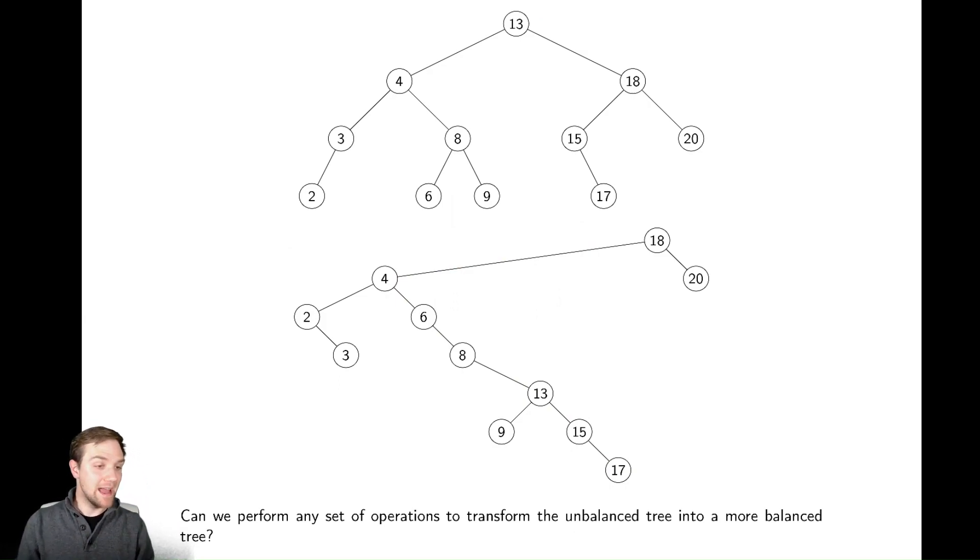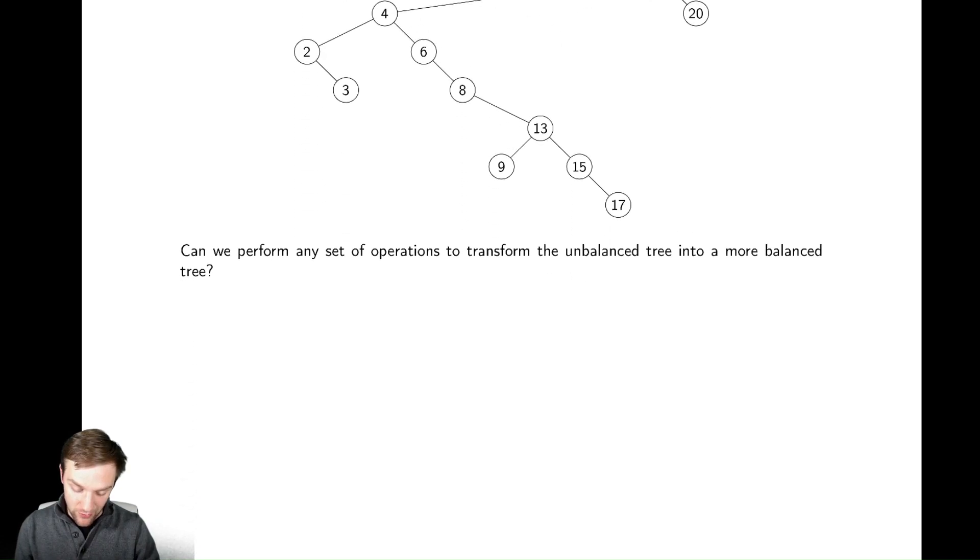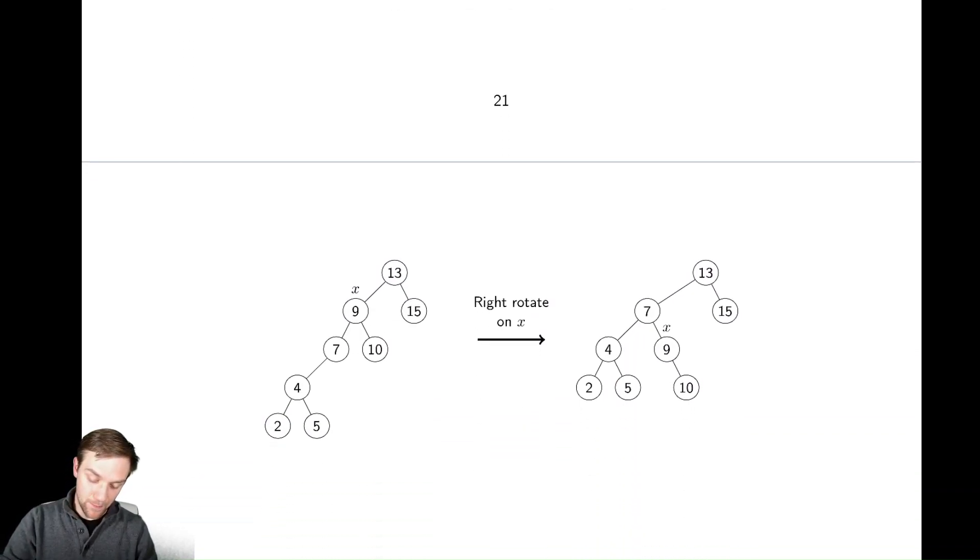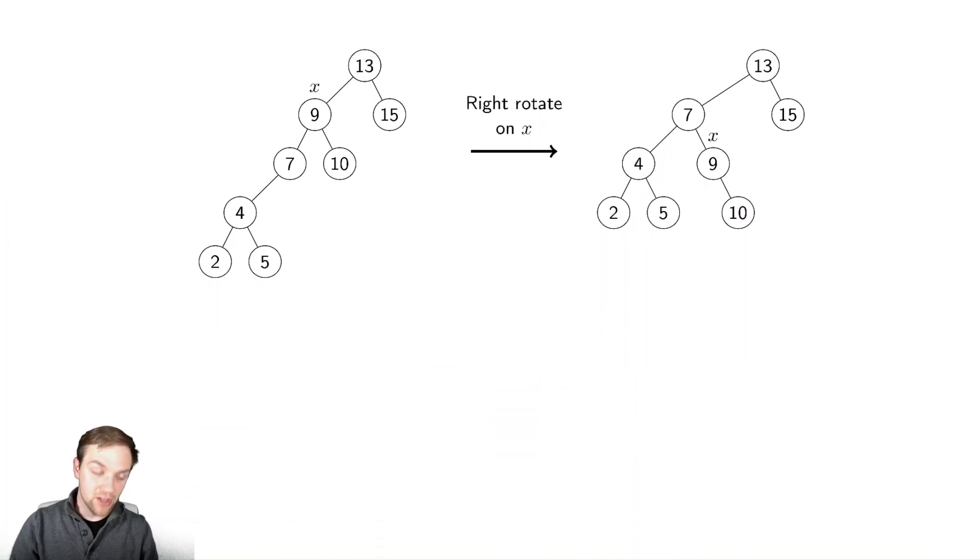So can I do anything to make this more efficient? Well, here's a strange idea. Let's go down to a simpler example. Here we have a simpler tree. What I'm going to do here is rotate in the tree, which doesn't really make sense as a word. It kind of will if you can understand what we're meaning by rotate. So here we are performing a right rotation on this node nine.